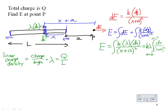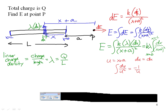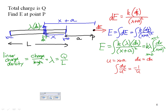To evaluate this integral, use a u-substitution: let u = x + a, so du = dx. The integral becomes ∫ du / u², which equals −1/u. Substituting back for u gives −1/(x + a), evaluated from x = 0 to x = L.